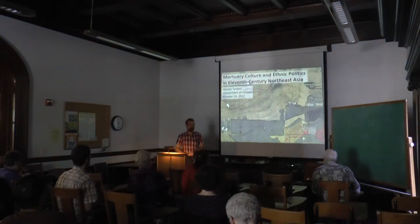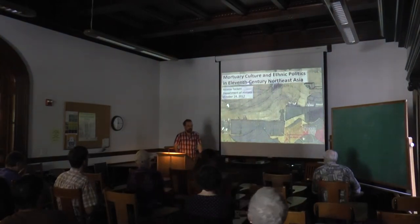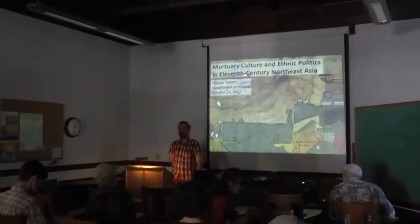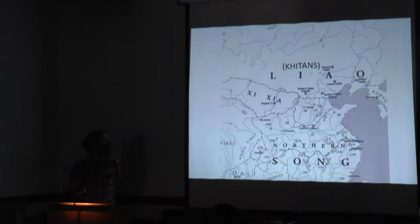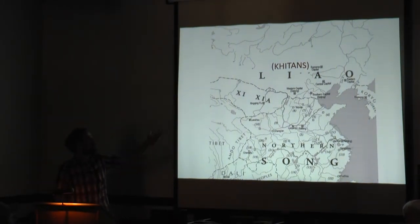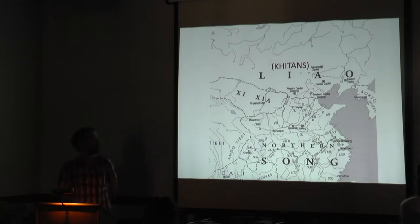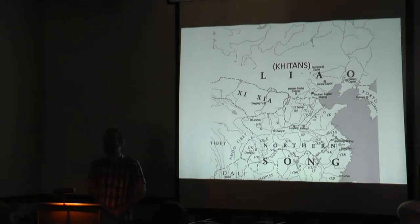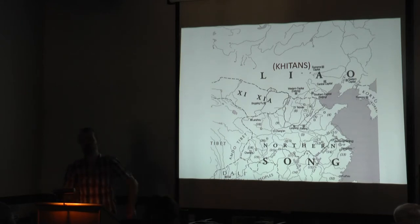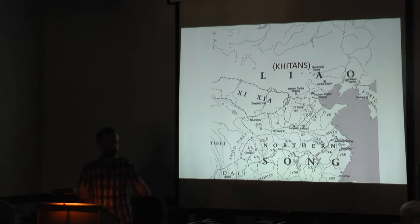Thank you very much. I'm very happy to be here. What I'm going to talk about today is 11th century China. Here is a map to get us started. During the 11th century, East Asia, and specifically Northeast Asia, was divided up among two major empires: the Song Empire to the south, and the Liao Empire, which was founded by Khitans from the Eurasian steppe to the north.